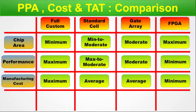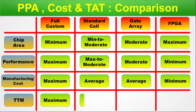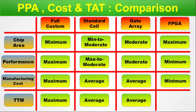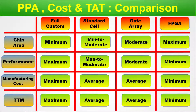Next parameter: time to market (TTM). For full custom, it is maximum — large human hours required. For standard cell, it is average. For gate array, it is average. For FPGA, it is minimum — very few human hours are needed before the product reaches market, as the end user programs it after purchase. Standard cell and gate array lie in the average section. This completes the comparison for PPA (power, performance, area), cost, and turnaround time.